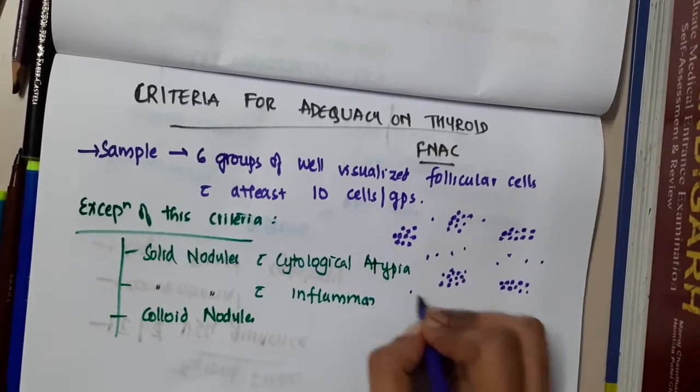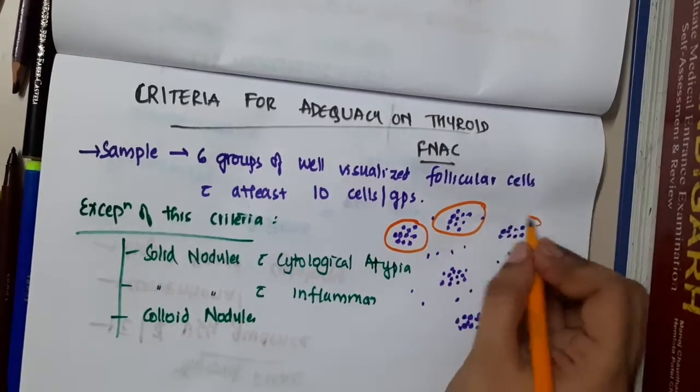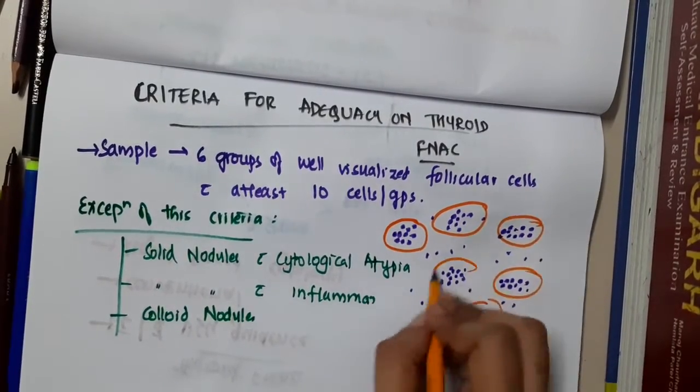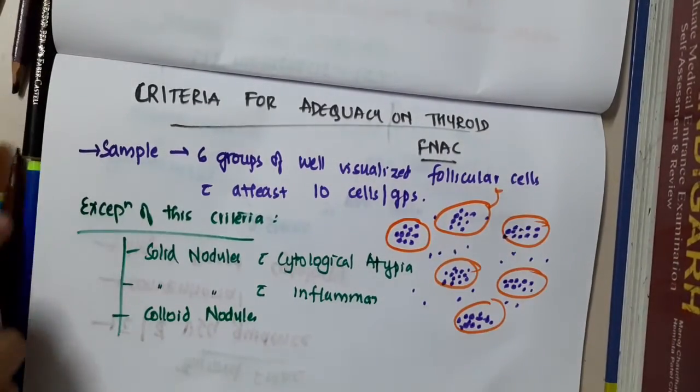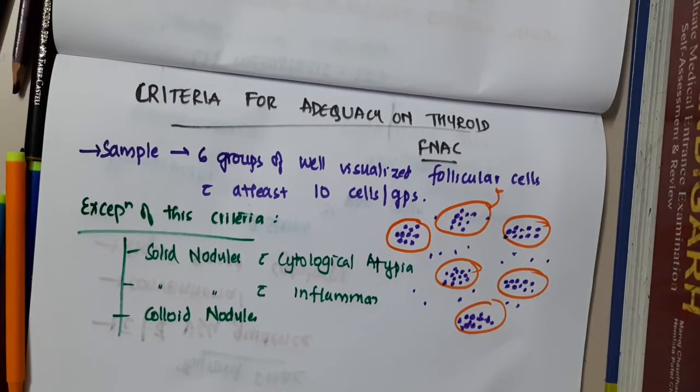In the middle also you will have some cells but you won't count them. You will have to see the main criteria is 1, 2, 3, 4, 5, 6 groups with well visualized follicular cells, each of 10 cells.